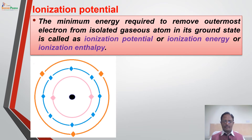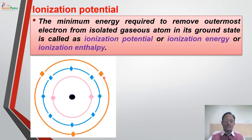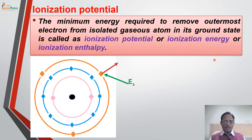Consider any atom. If I want to remove an electron from this atom, the most easily removable electrons are the outermost shell electrons because they are the most loosely bound electrons. Each of these electrons is under the influence of attractive force from the nucleus. But since the distance of the outermost shell electron is maximum, the force of attraction between nucleus and outermost electron is minimum. If I supply some energy equal to E1 and the electron is removed, then that energy is called the first ionization potential or first ionization energy.